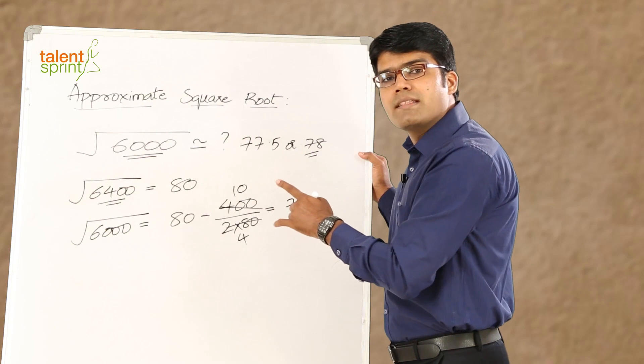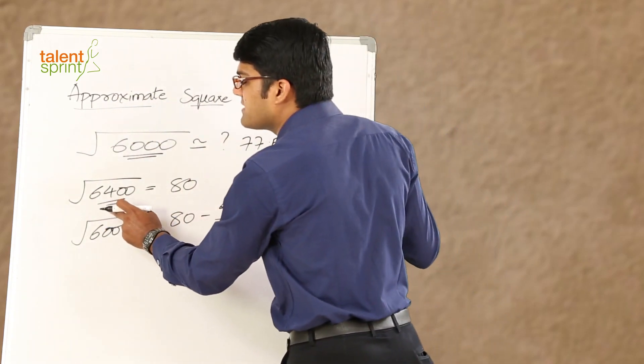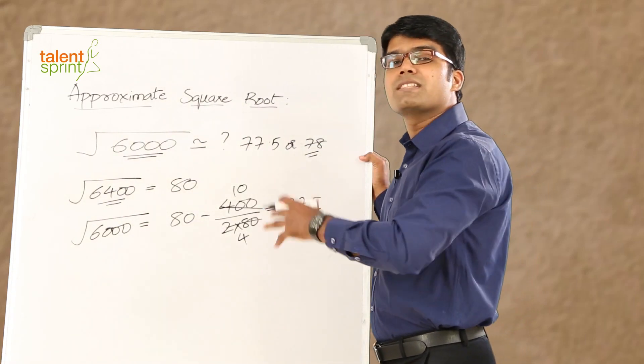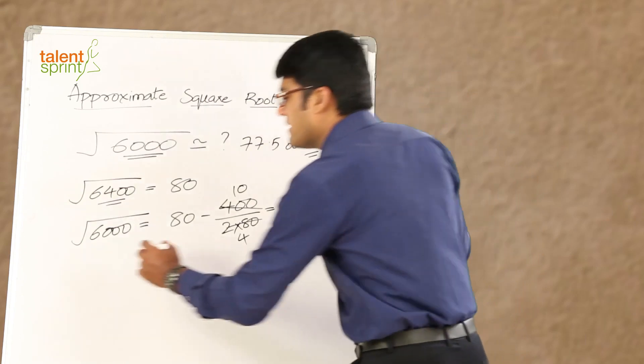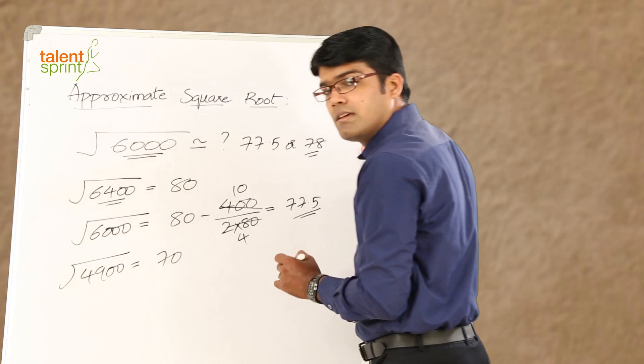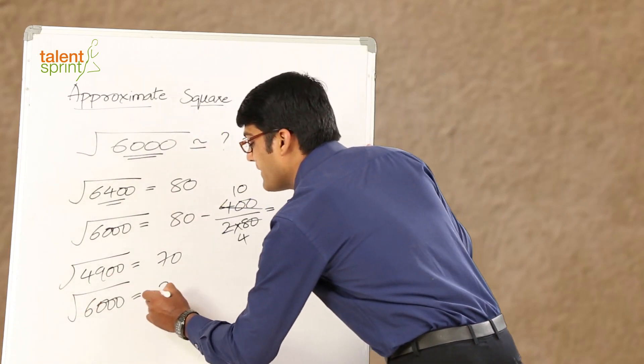The same question can also be answered when we take something lesser than 6,000. Like in the first case, we have considered 6,400 which is more than 6,000. But let us see how to do when we start with something like 4,900. We know that square root of 4,900 is 70.